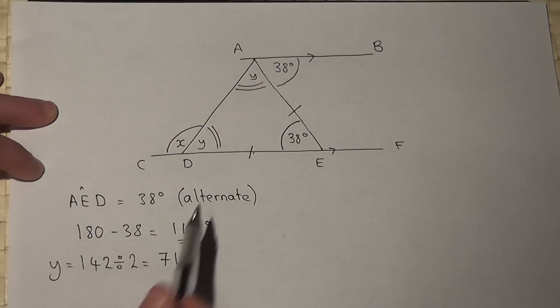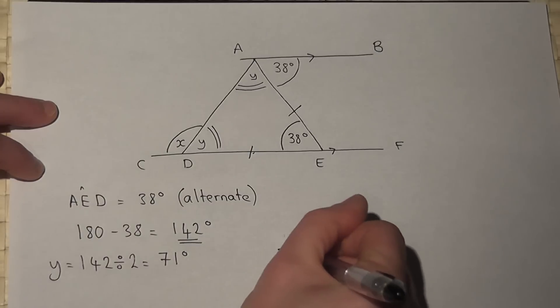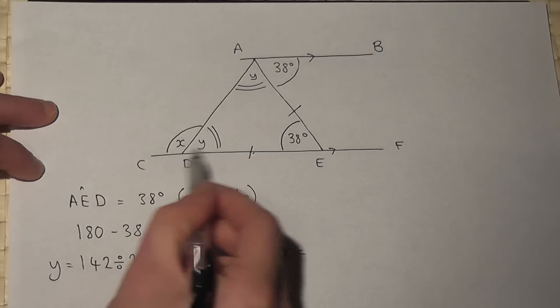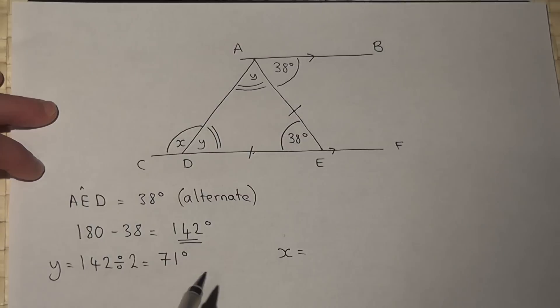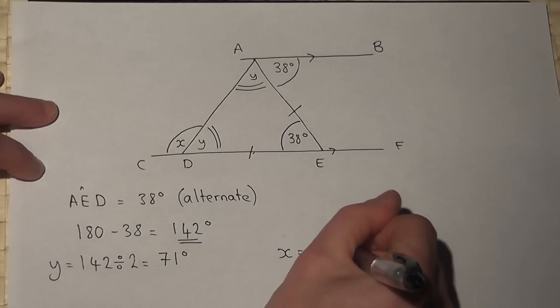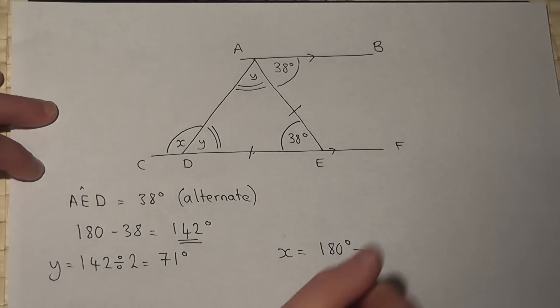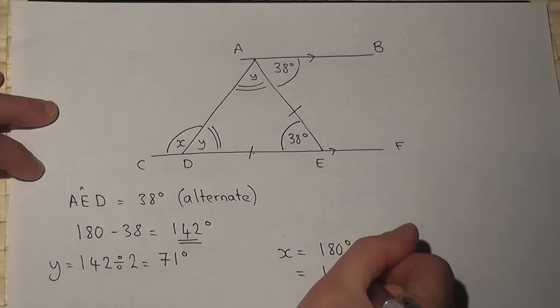I can therefore finish off by finding X because X and Y are on a straight line and they meet at a point. So they add to 180 degrees. X will be 180 take away Y which is 71. So X equals 109 degrees.